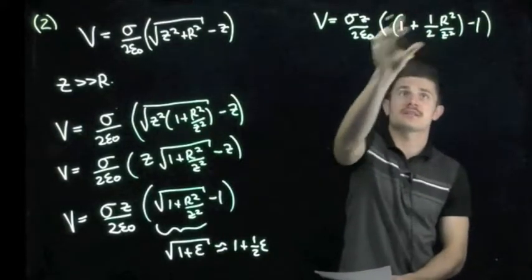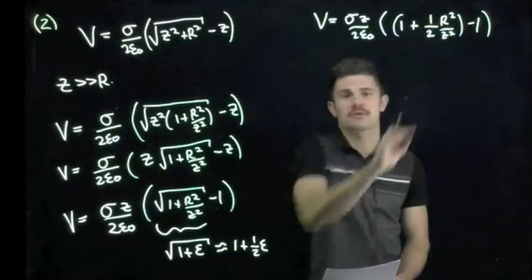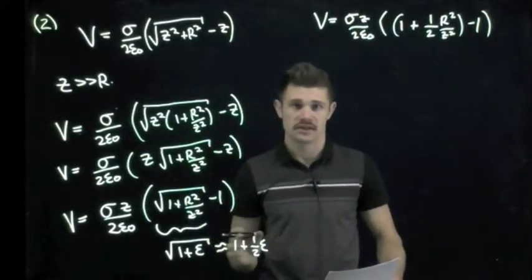Where again, this expansion here came from the expansion of the square root where we have one plus one half times our epsilon term, where epsilon in this case was r squared over z squared.